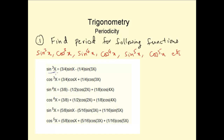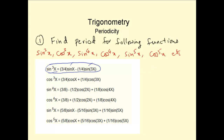So for example, sin³x is actually (3/4)sinx minus (1/4)sin3x. So for this function, the period would be the LCM of the period of sinx and sin3x. The LCM of the period of sinx — which is 2π — and sin3x — which is 2π/3 — would be 2π.